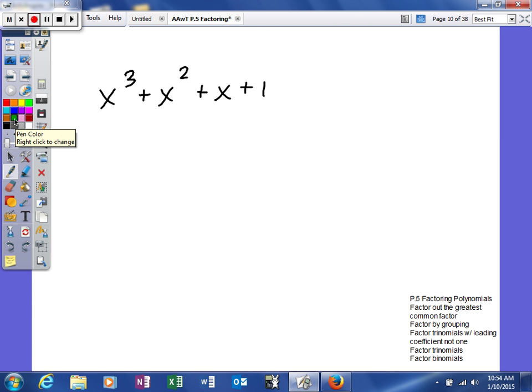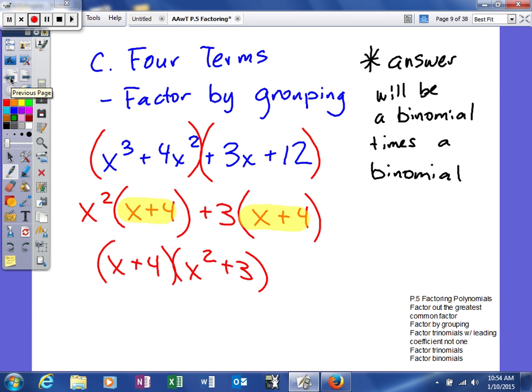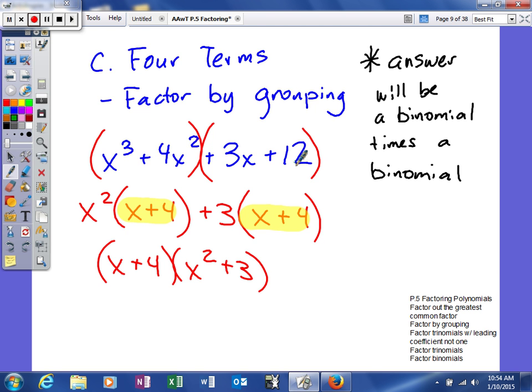I would love to factor out a common factor first. I forgot to mention that on the last example. If I could have factored out a common factor between these four, then I would have done that at the beginning. But only three of the terms have a variable, so I can't factor out a variable. And there isn't something that will go into 1, 4, 3, and 12 that's not named 1, and 1's a factor of everything.